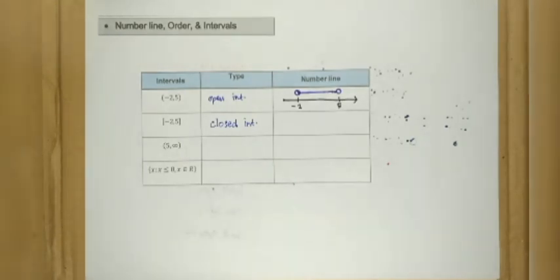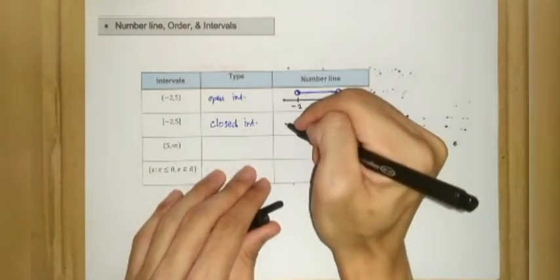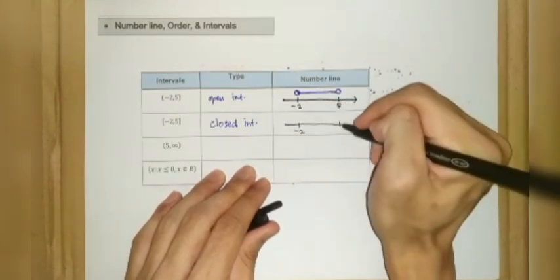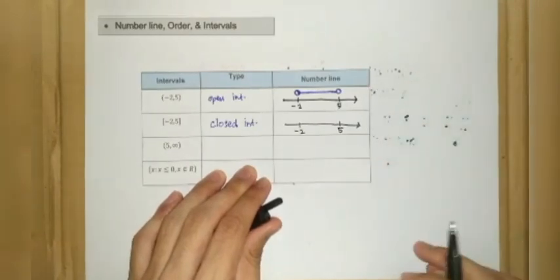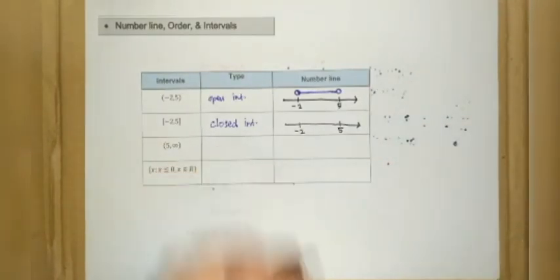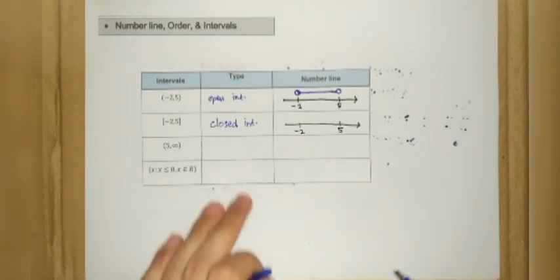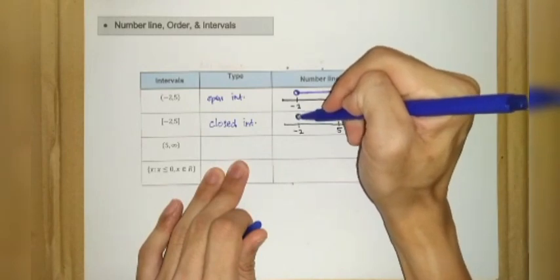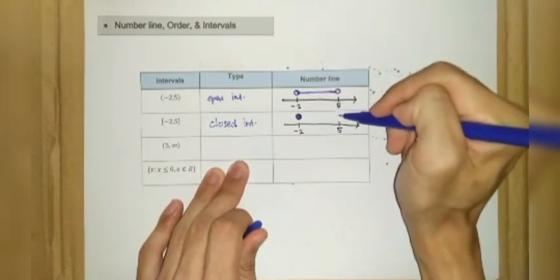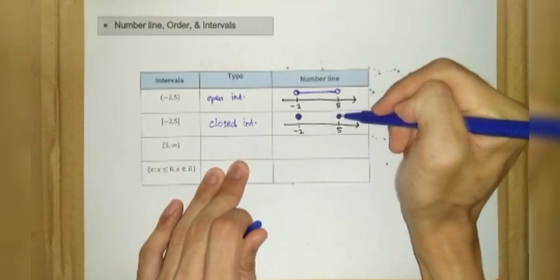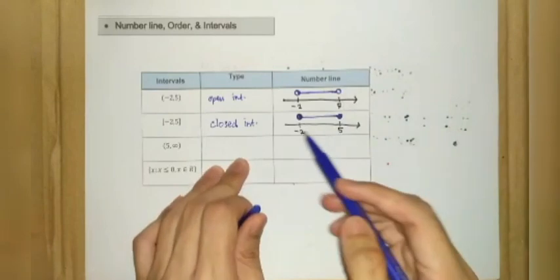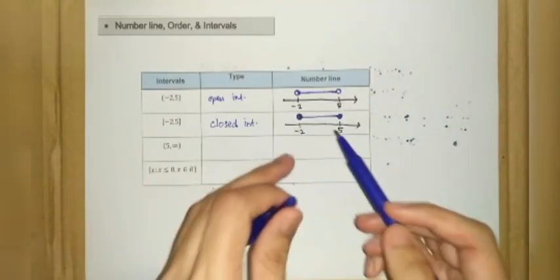We can represent this interval on the number line. We have negative 2 and 5, and we denote the endpoints with dense dots for both, indicating that both endpoints are included in the interval.